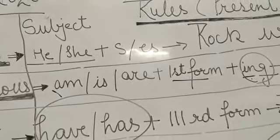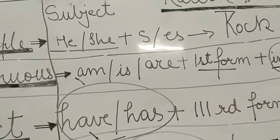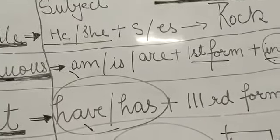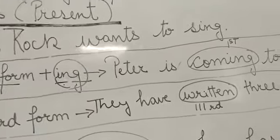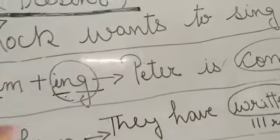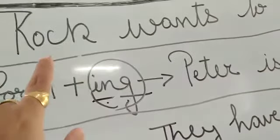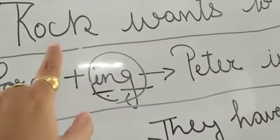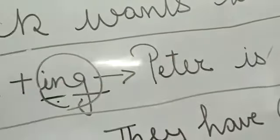Subject plus s or es. Subject means the main heading: he, she. The subject is the starting part of the sentence. For an example, Rock wants to sing. Now a simple question: ma'am why s here? It is very very clear. Here it is a singular. With singular we will always add s or es. If it was plural here, we never add s or es.